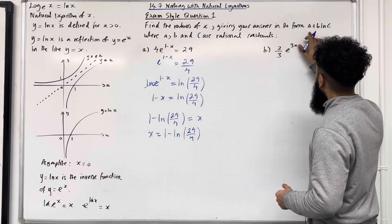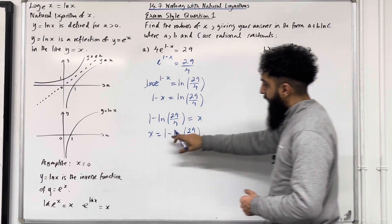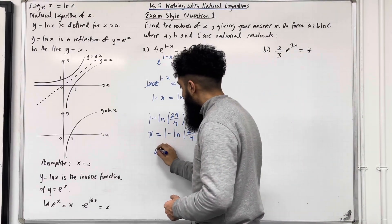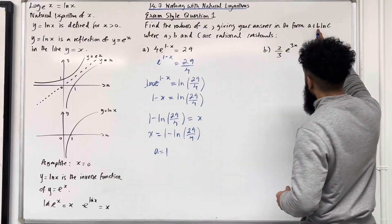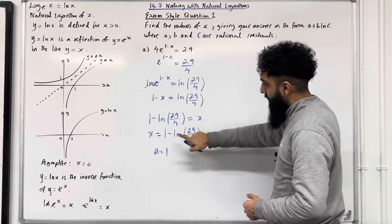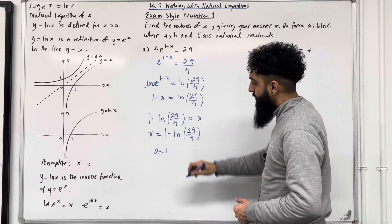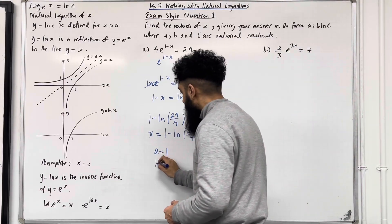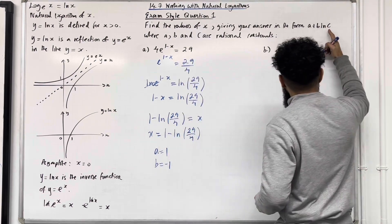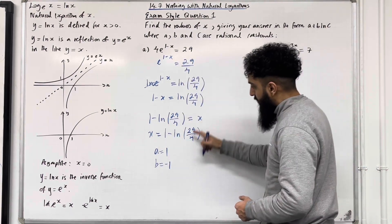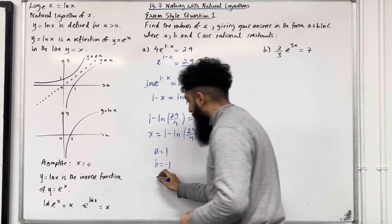So here a = 1, b is the number in front of the natural log which is -1, and c = 29/4.